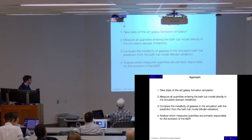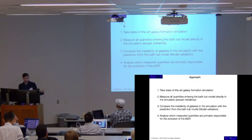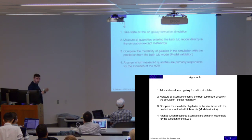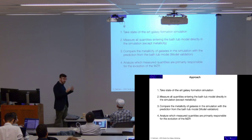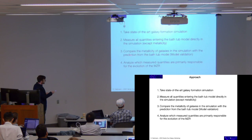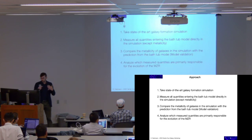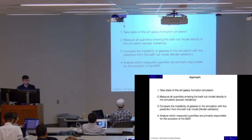The approach is as follows. We start with a state-of-the-art galaxy formation simulation. We measure all the quantities that enter the bathtub model directly from the simulation, making no ad hoc assumptions — we just measure it. The only quantity we don't use in the bathtub model is the metallicity, because that is our prediction — the number we want to compare the bathtub model prediction to. Then we compare the predictions of the bathtub model to the metallicity of the galaxies and see what we can learn.